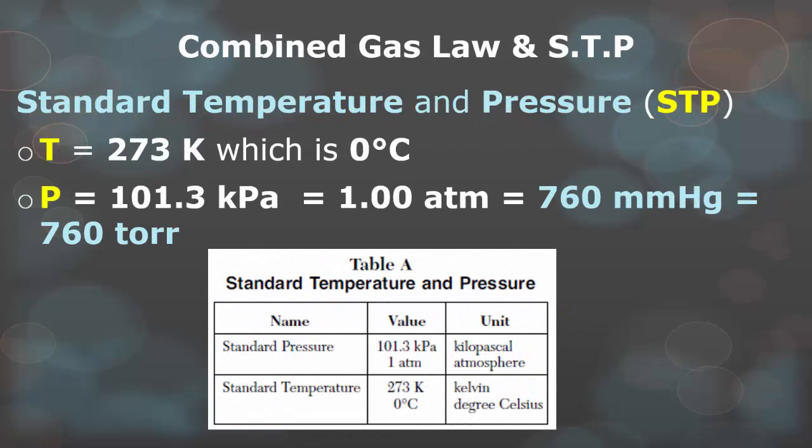When we use the combined gas laws, we use reference table A to tell us our standard temperature and pressure. Temperature is either 273 Kelvin or 0 degrees Celsius, and pressure is either 101.3 kPa, 1 atmosphere, or 760 millimeters of mercury, also known as 760 Torr.